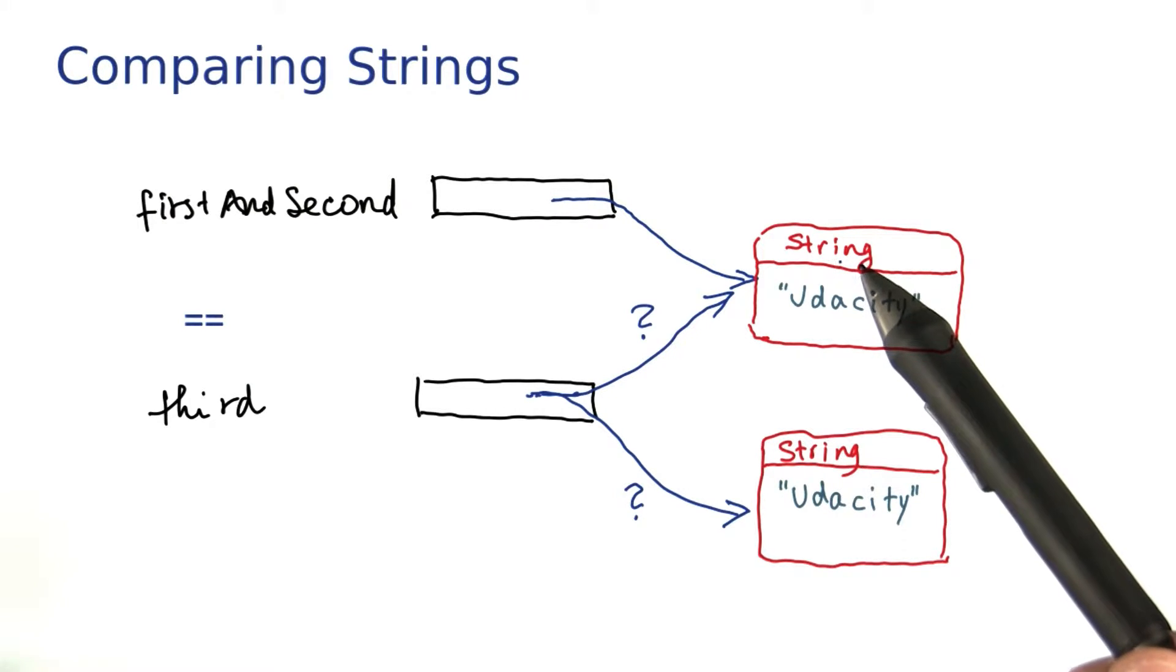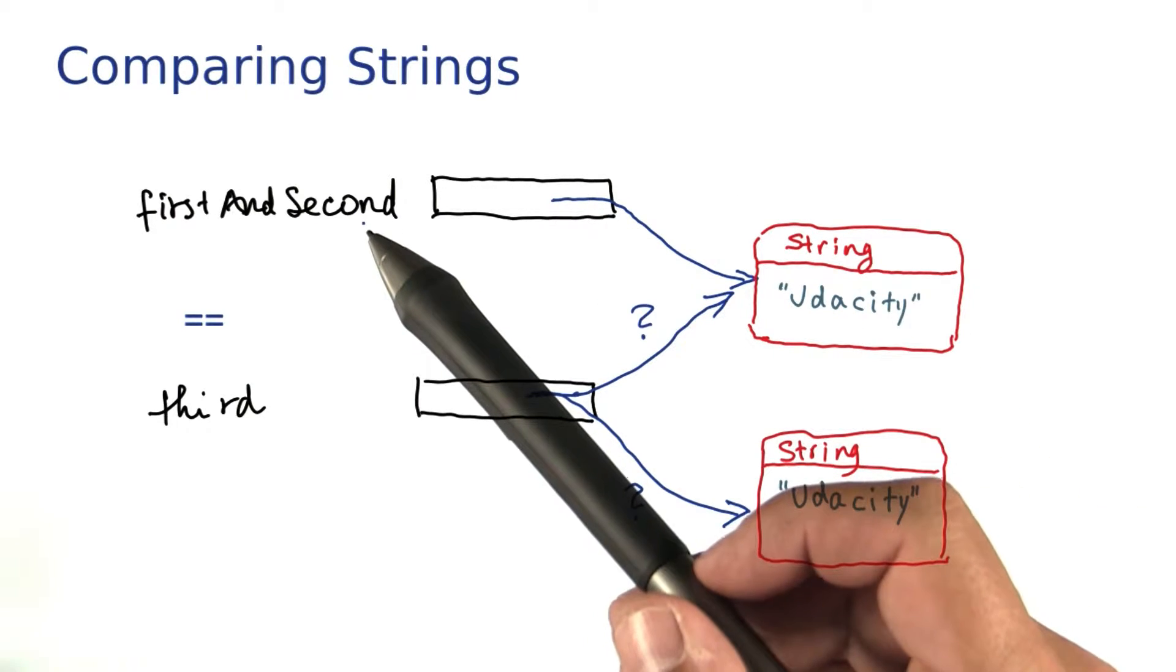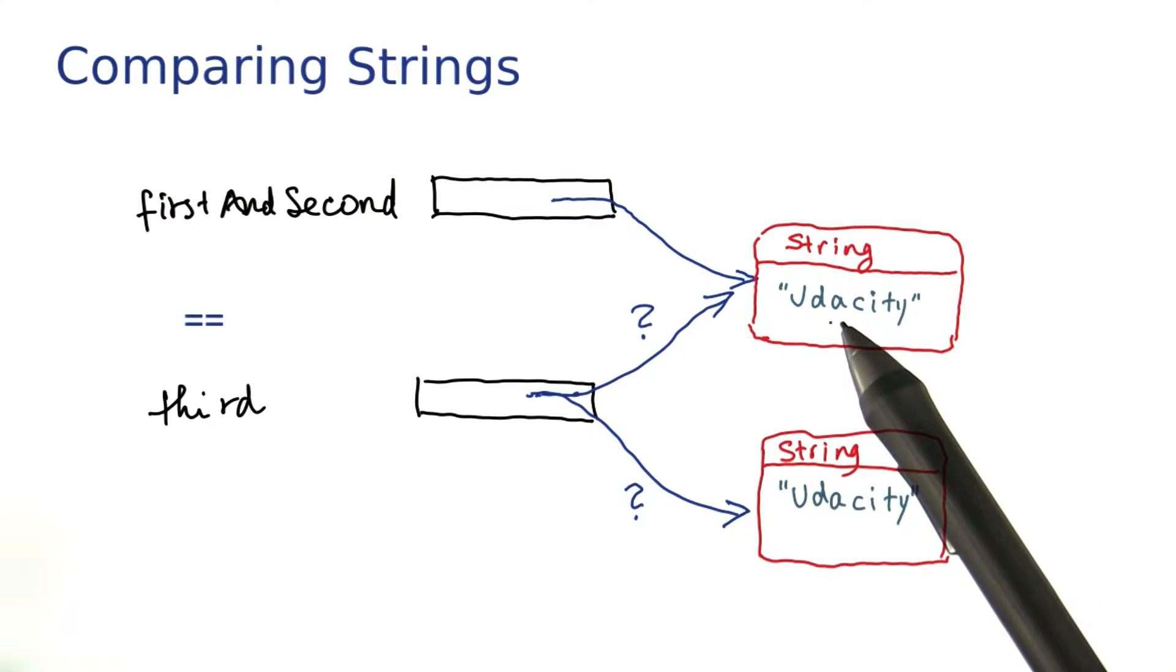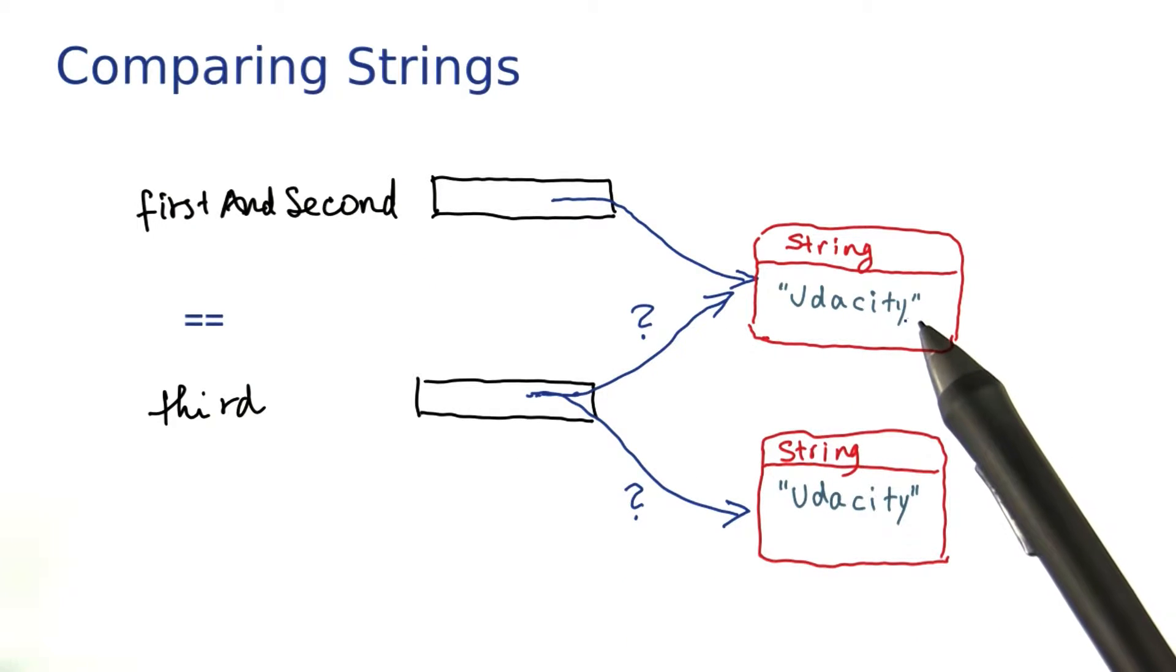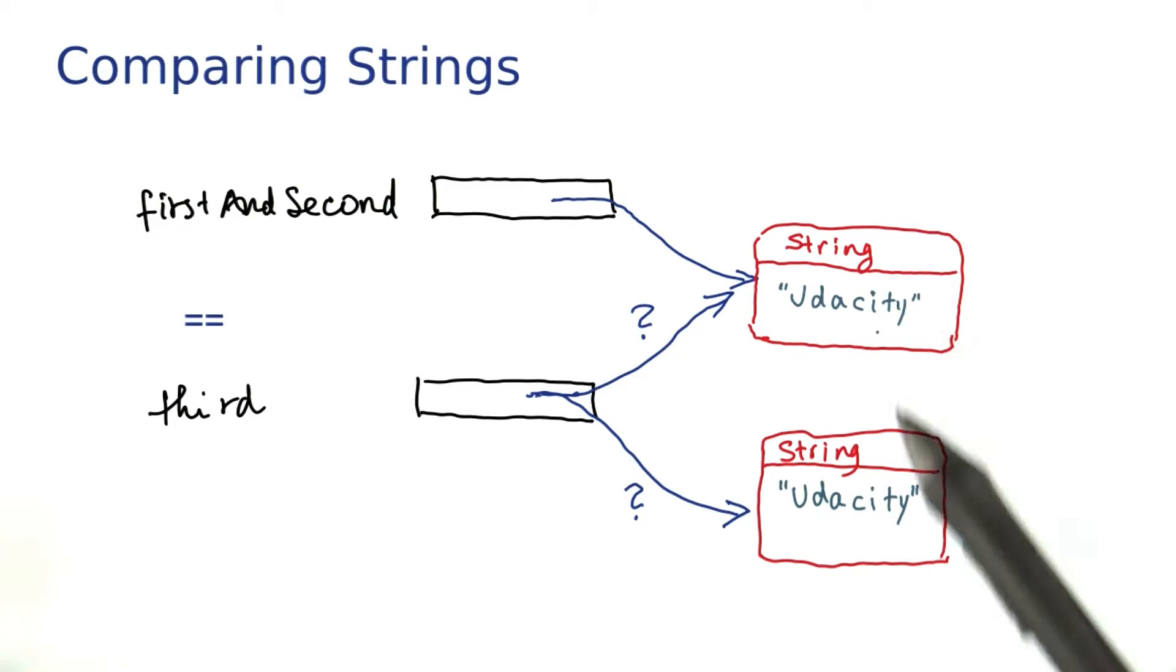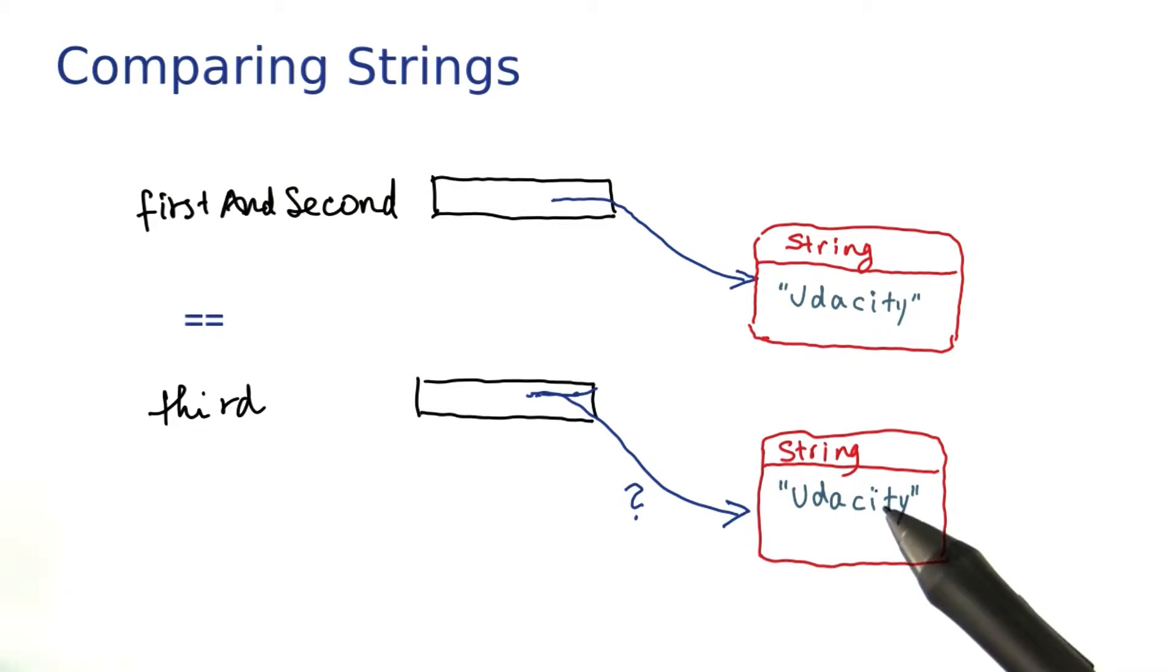Because if you remember what happened, first and second was obtained by gluing together this string and that string. And a brand new object had to be created to hold that contents. The third string was initialized with the literal string Udacity, which came from elsewhere. So in this case, the objects are different.